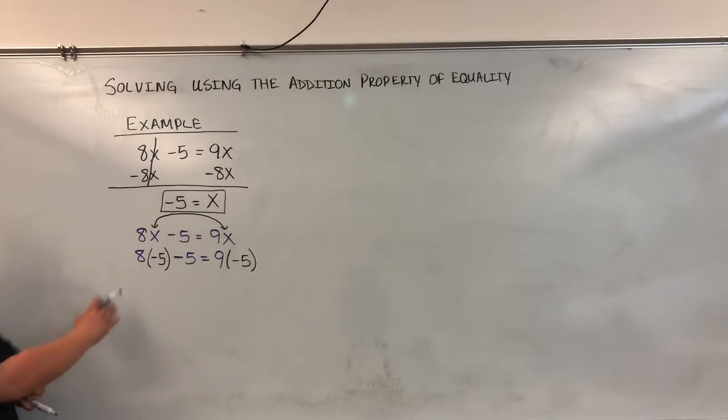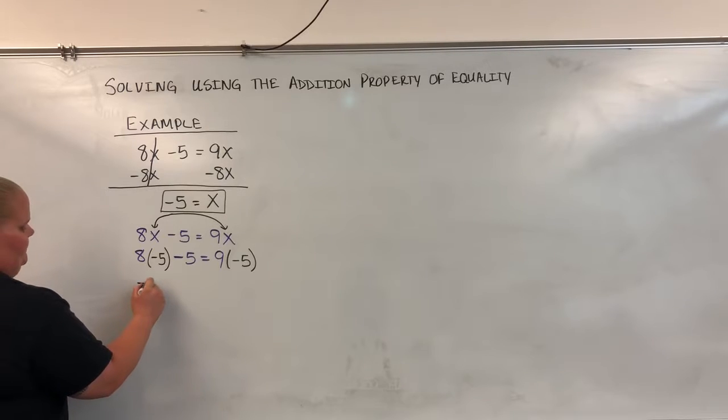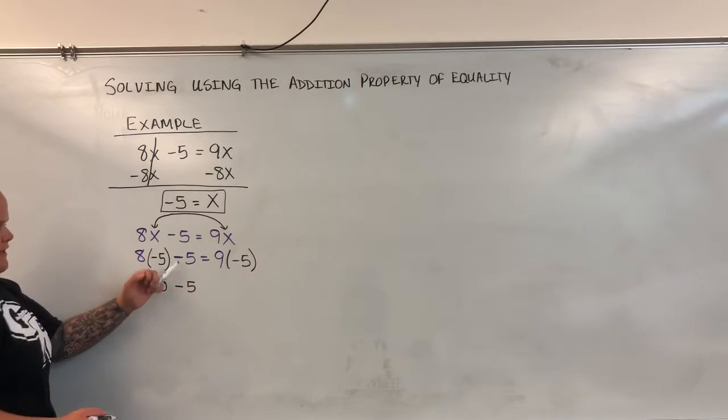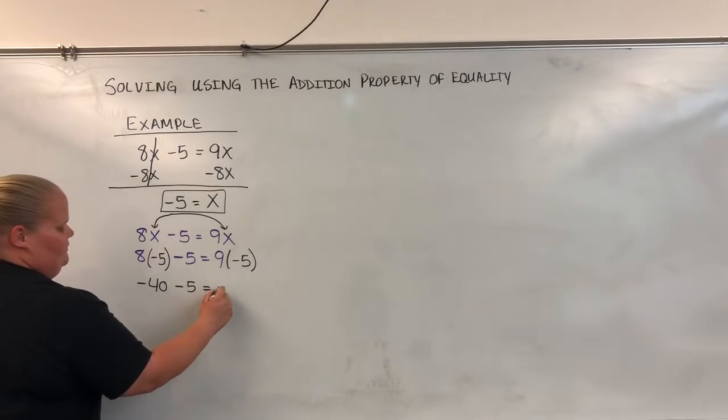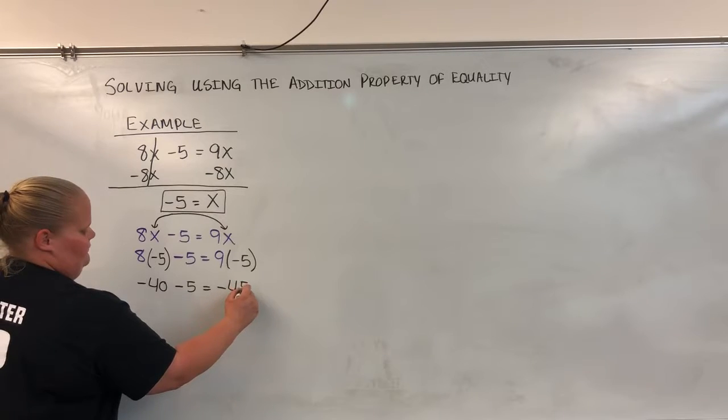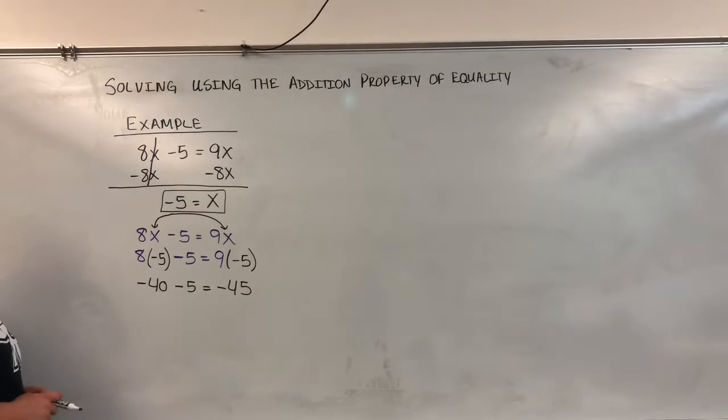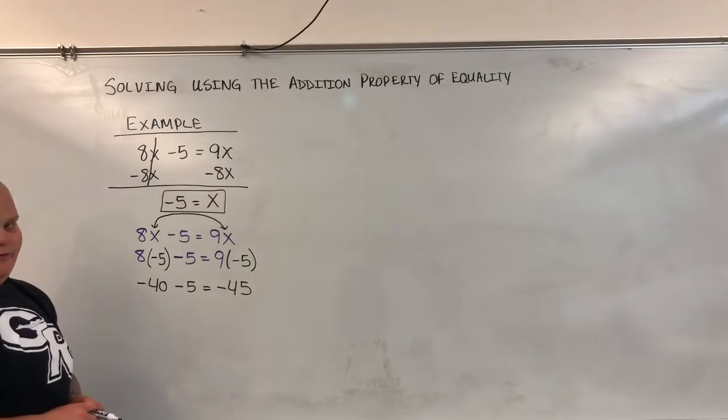Now I'm just going to check. 8 times negative 5 is negative 40. I still have this minus 5 I have to write down. And it's going to equal 9 times negative 5, which is negative 45.